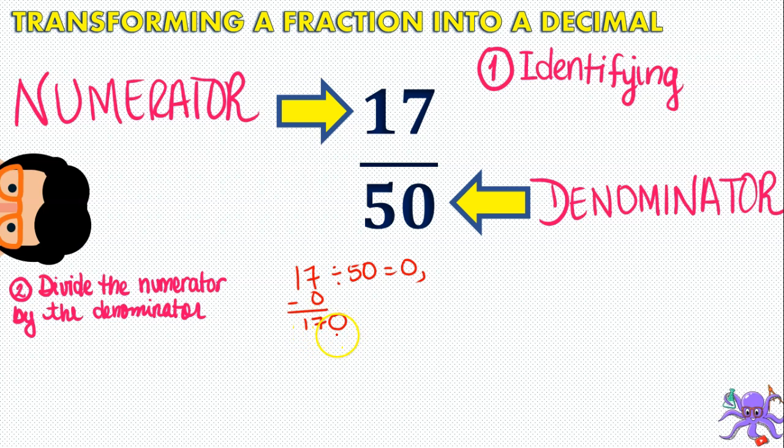So, 170 divided by 50, that's 3. 3 times 0 is 0, 3 times 5 is 15. And when we subtract, we get a 20. And then, because we have finished with the main number up there, we can, and we have already added the comma, we can continue adding zeros. So, 200 divided by 50, and that is going to be 4. 4 by 0 is 0, and 4 by 5 is 20, and we subtract that. And again, we have a remainder of 0, and that means we are finished.